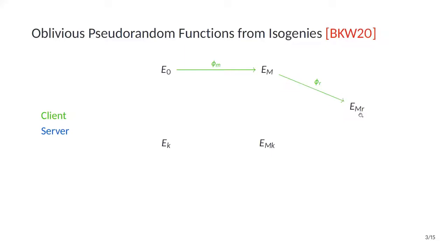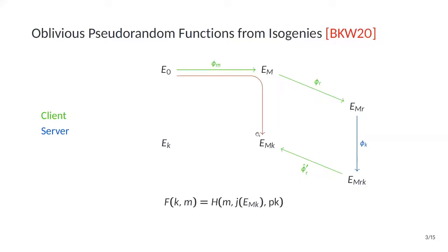This curve is then sent to the server, who computes the isogeny phi_K. Note that this isogeny is parallel to the isogeny between E0 and E_K, and corresponds to that one. The server also provides some torsion information which allows the client to invert the isogeny phi_R. When the client inverts the isogeny, it unblinds the value and obtains the curve E_{M,K}. In this way, the client can recompute the curve that would have been computed by a shared SIDH computation, but the client does not learn the server's public key and the server learns nothing about the client. More formally, we can define the pseudorandom function F to be the hash of the input M, the resulting curve or its J-invariant, and the public key of the server.